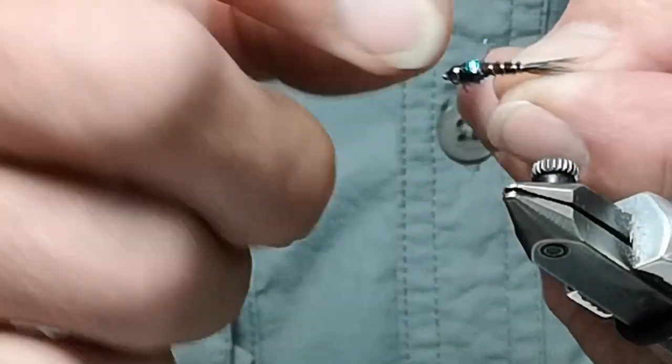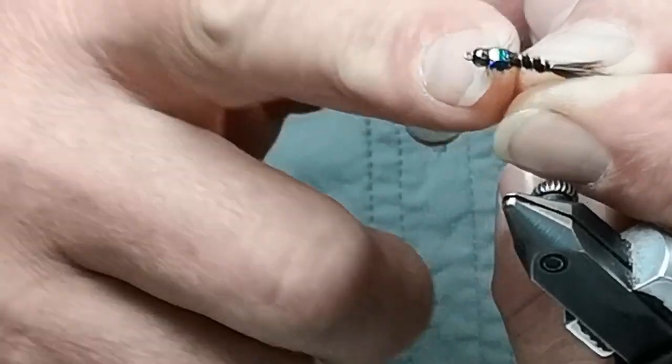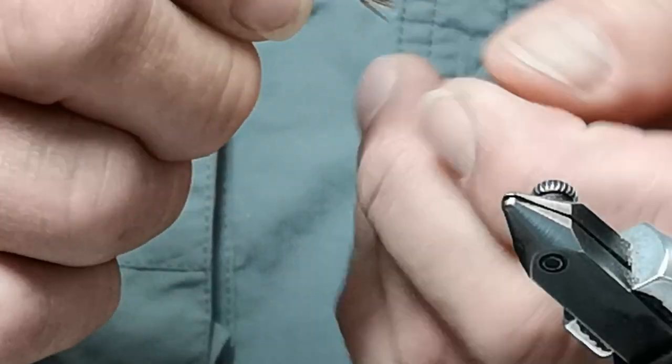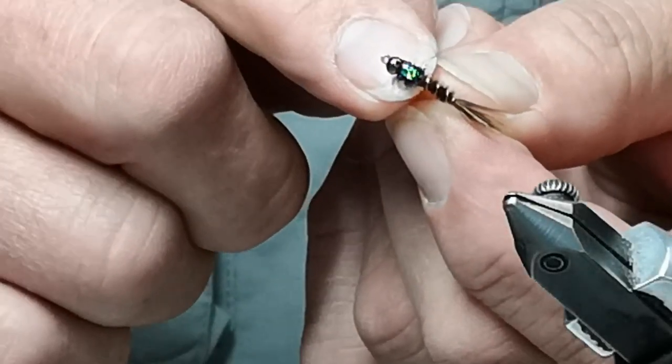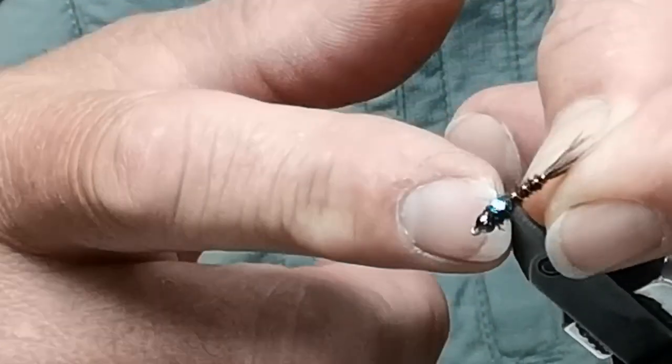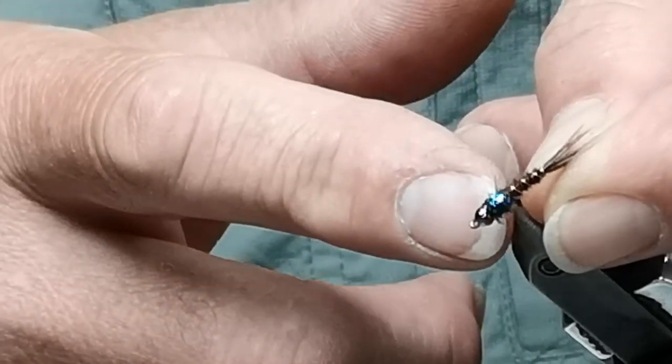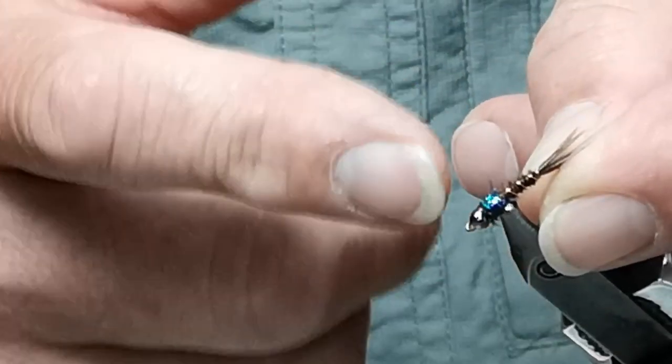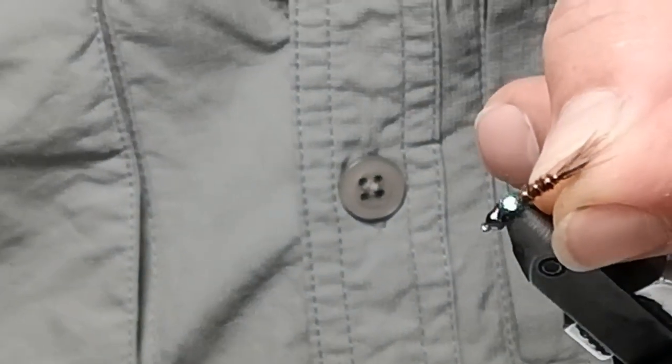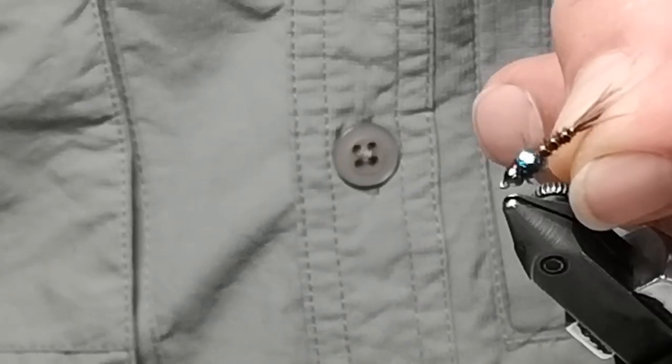When you're tying, you match the size of bead to the size of the hook that you're using. This one is a smaller bead; I didn't want to overbuild the bead head on this one or overdo the whole system with the bead. I wanted it to be kind of a non-visible bead. That's the swimmer style pheasant tail matching the swimming mayfly nymph.